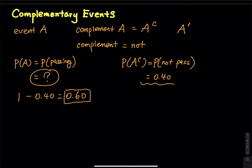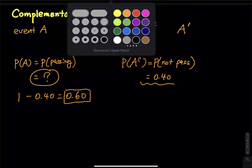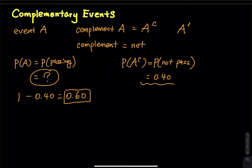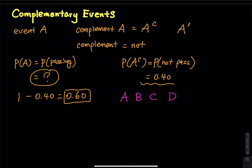Here is another way to think about complement. Say I have four items on my table, each represented by a letter: A, B, C, and D. I want to grab A, B, and C. There are two ways to do it. The first way is you just grab those three items and you're ready to go.